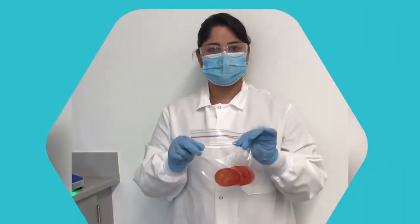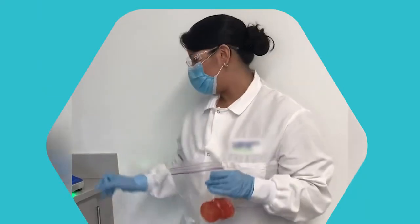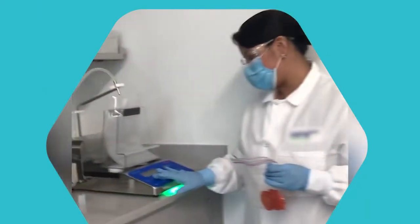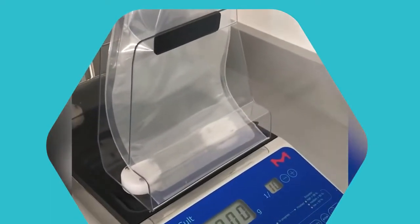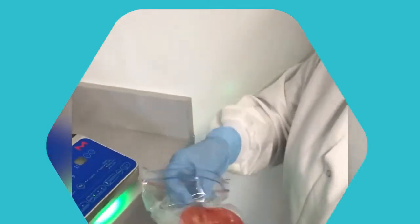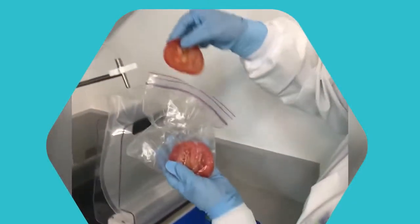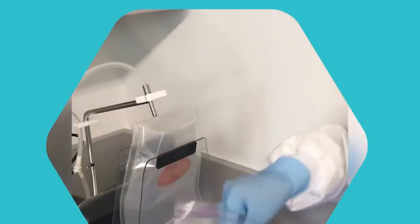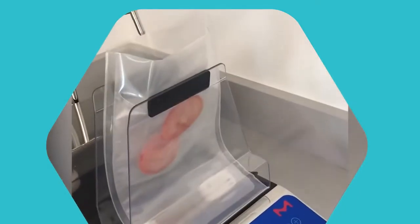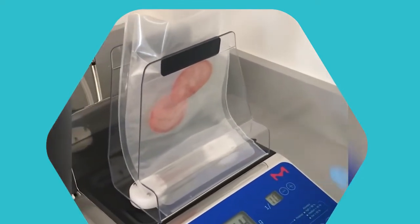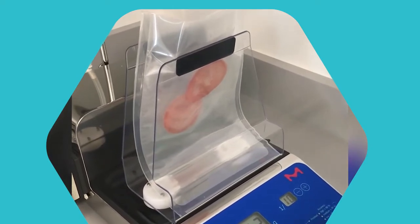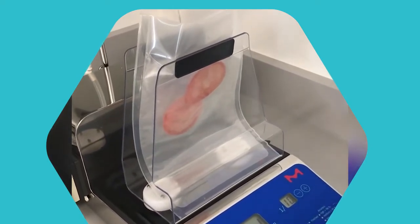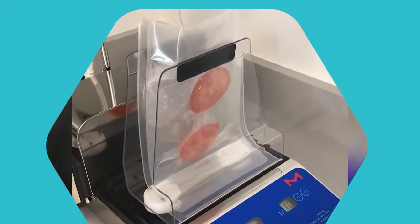Now we're going to start diluting our samples, our tomatoes. So we're going to start taring our equipment, the diluter. Once it's taring, I'm going to add my samples to this. Two slices of tomato. It's going to give me one to ten dilution, which is like tenfold. And all I have to do is click go. It's going to add buffer to it to dilute.